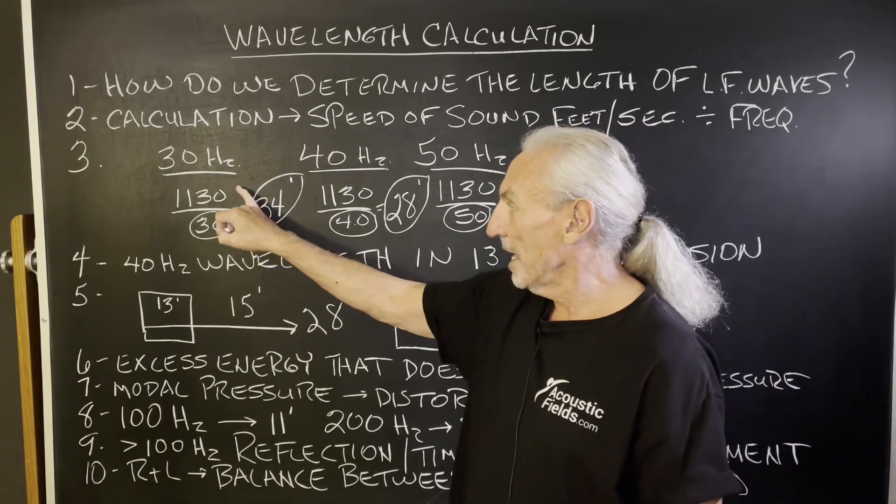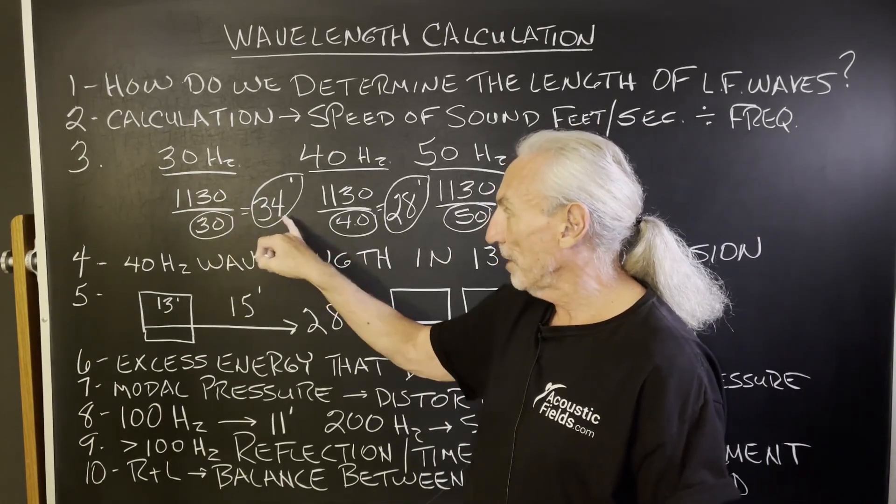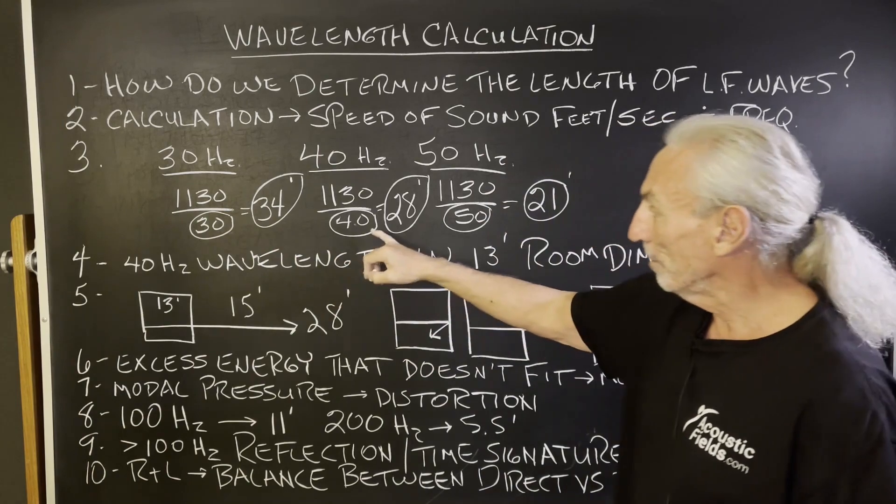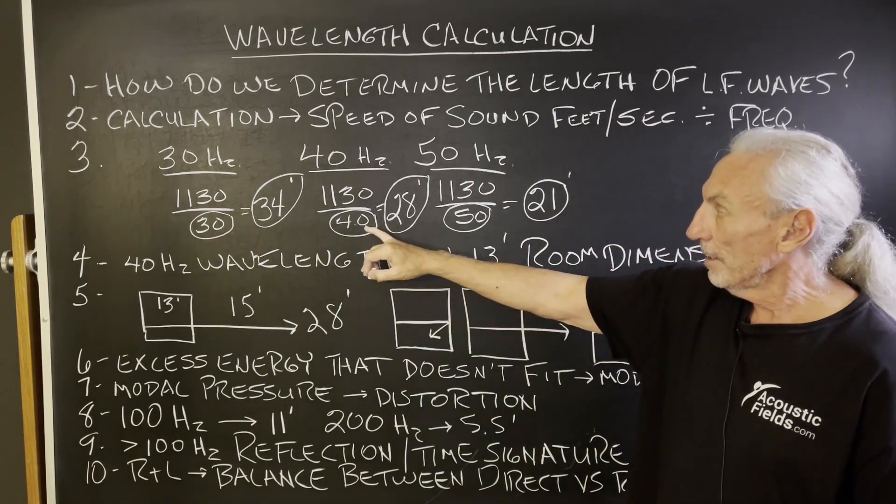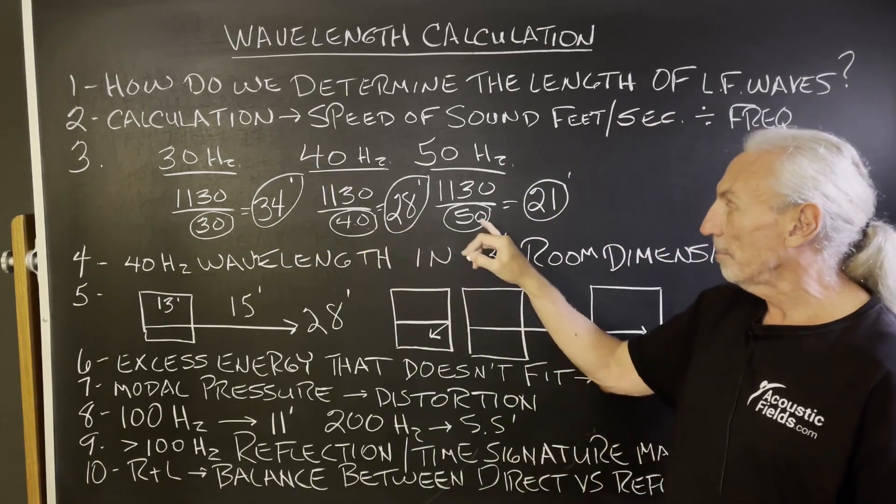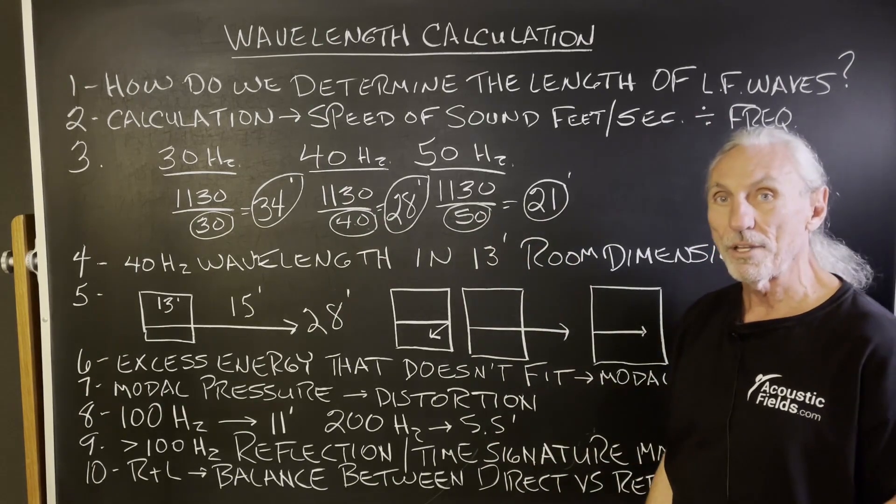So just take the constant, speed of sound, divide by 30, you're going to get 34 feet for a 30 hertz problem. You're going to get 28 feet for a 40 cycle problem. You're going to get 21 feet for a 50 cycle problem.